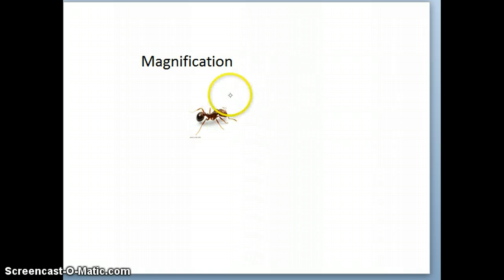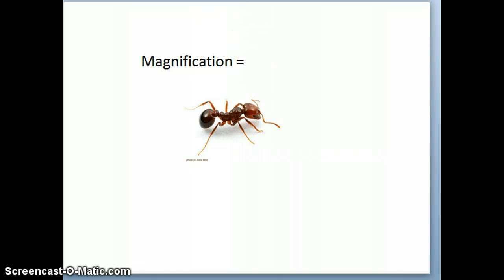So let's say I have a picture of this ant right here. Well the picture is tiny and I can't really see it so I'm going to zoom in two times. If I zoom in two times, I would say that the magnification for this is 2x.